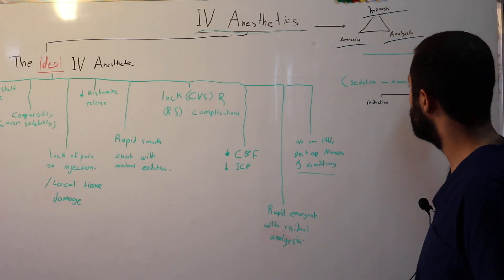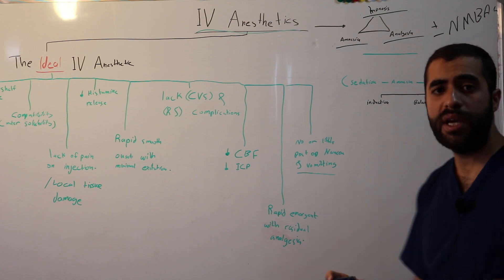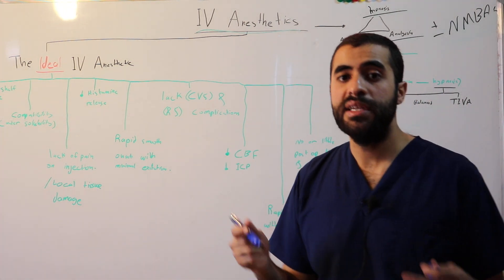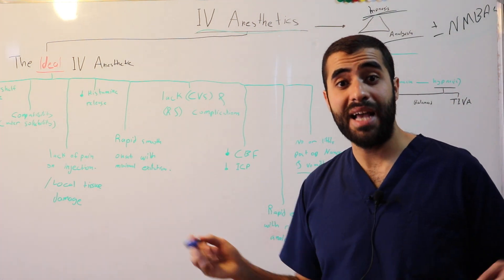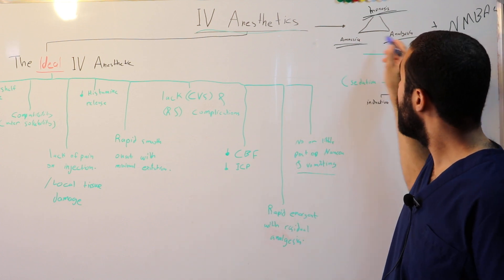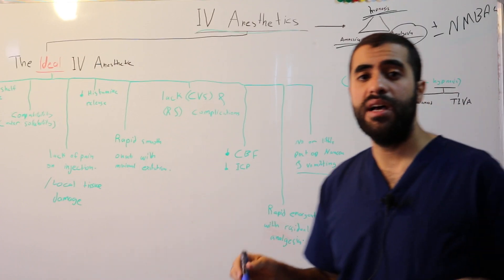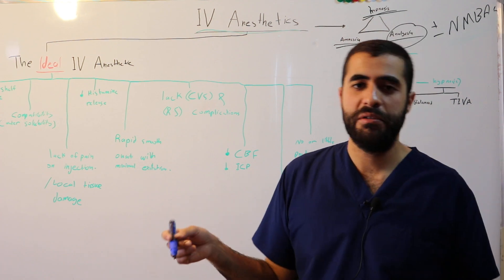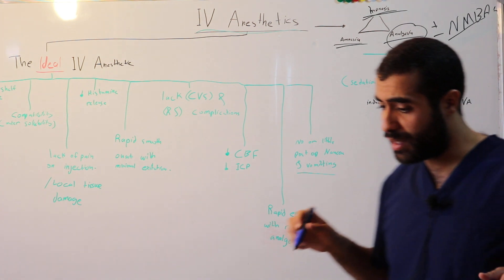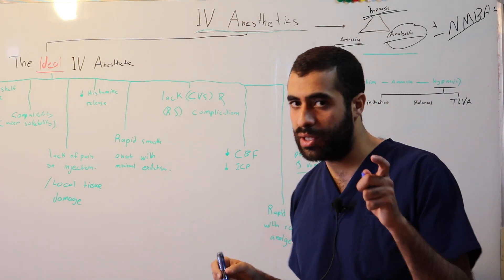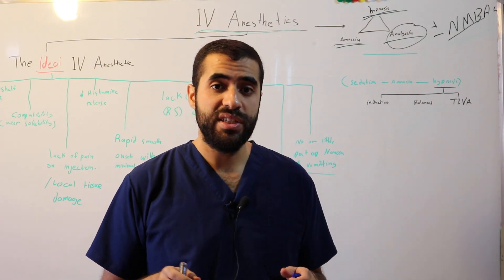When we talk about the pharmacology of anesthesia we are talking about agents that accomplish these things. The drugs that accomplish hypnosis and amnesia are the IV anesthetics and inhalational agents. The drugs that provide analgesia are opioids, NSAIDs, or acetaminophen. The drugs that cause neuromuscular blockade are the neuromuscular blocking agents — the muscle relaxants — and we will also talk about those.